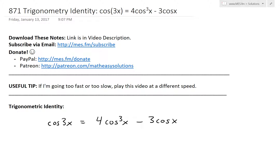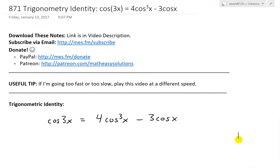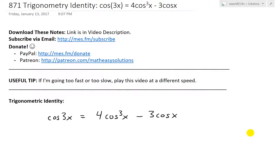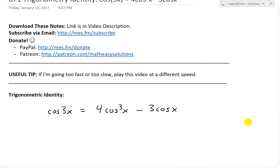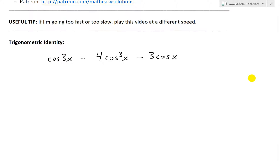Hi, it's time for another Math Easy Solution. Today we're going to discuss further into trigonometry and look at another identity. This time I'll go over this one: cosine 3x equals 4 cosine cubed x minus 3 cosine x. This is similar to my last video on the trigonometric identity for sine 3x. So let's look at the proof for this.